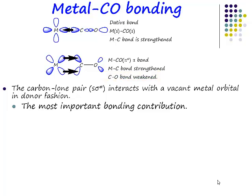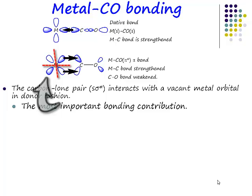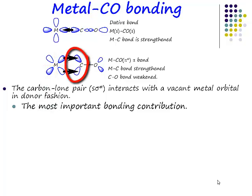If you look at the symmetry of that, it has the right symmetry to overlap with other orbitals. If this is the XY plane, the d-orbital shown is DXY. Now DXY doesn't point along the axes — it points between the axes. So if this is pointing between the axes, and these lobes are also pointing between the axes, they have the right symmetry to overlap with constructive phase and can form a new molecular orbital.